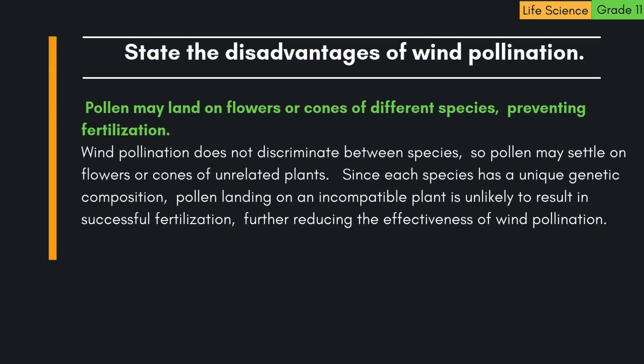5. Pollen may land on flowers or cones of different species, preventing fertilization. Wind pollination does not discriminate between species, so pollen may settle on flowers or cones of unrelated plants. Since each species has a unique genetic composition, pollen landing on an incompatible plant is unlikely to result in successful fertilization, further reducing the effectiveness of wind pollination.